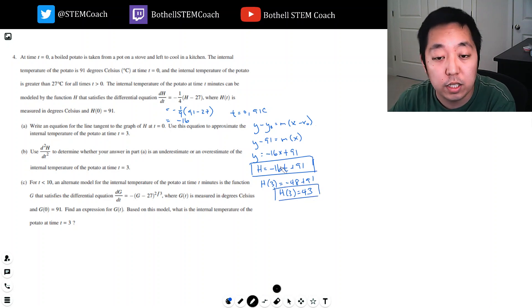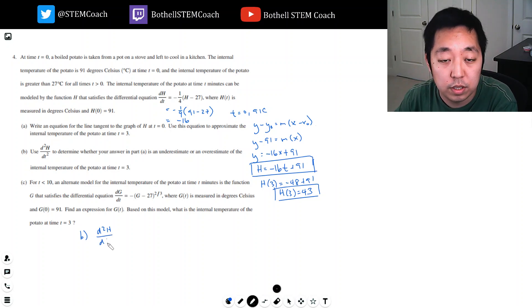Use the second derivative to determine whether your answer in part A is an underestimate or an overestimate for the internal temperature at time t equals three. The second derivative is just the derivative of this: d²h/dt² equals negative one-fourth times dh/dt, and the 27 derivative is constant.